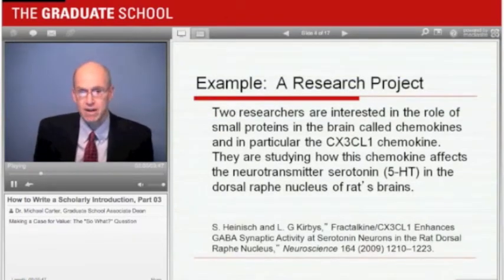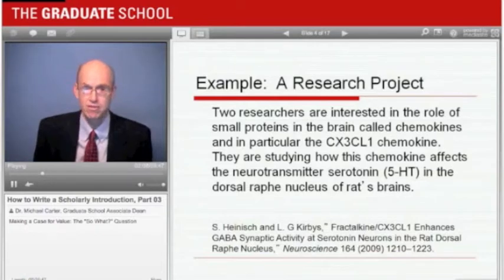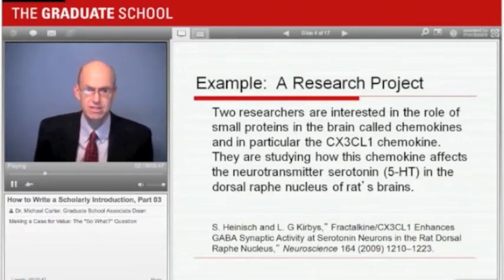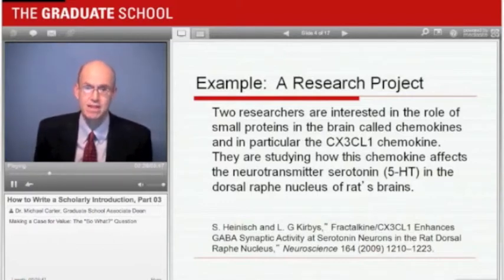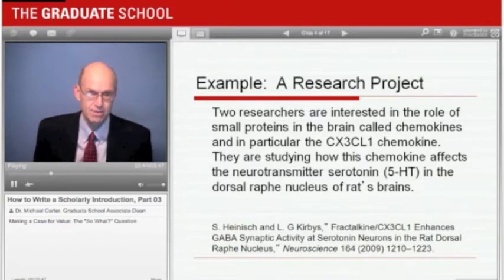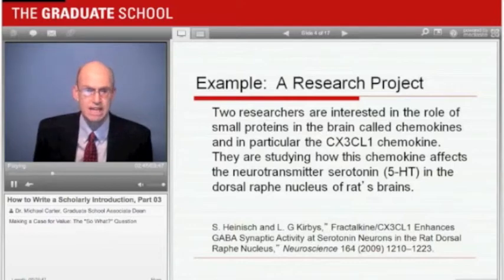To make it clearer how researchers can convince readers of the importance of a small project by placing it in the context of a broader value context, let's look at an example. In this example, two researchers are studying the function of the CX3CL1 chemokine in a particular area of the brain of rats. This chemokine appears to play a role in the work of the neurotransmitter serotonin, also known as 5-HT. So what we have here is a research project that is very narrowly defined, and on its own it's difficult to see the importance of it. How could our researchers get this research published?